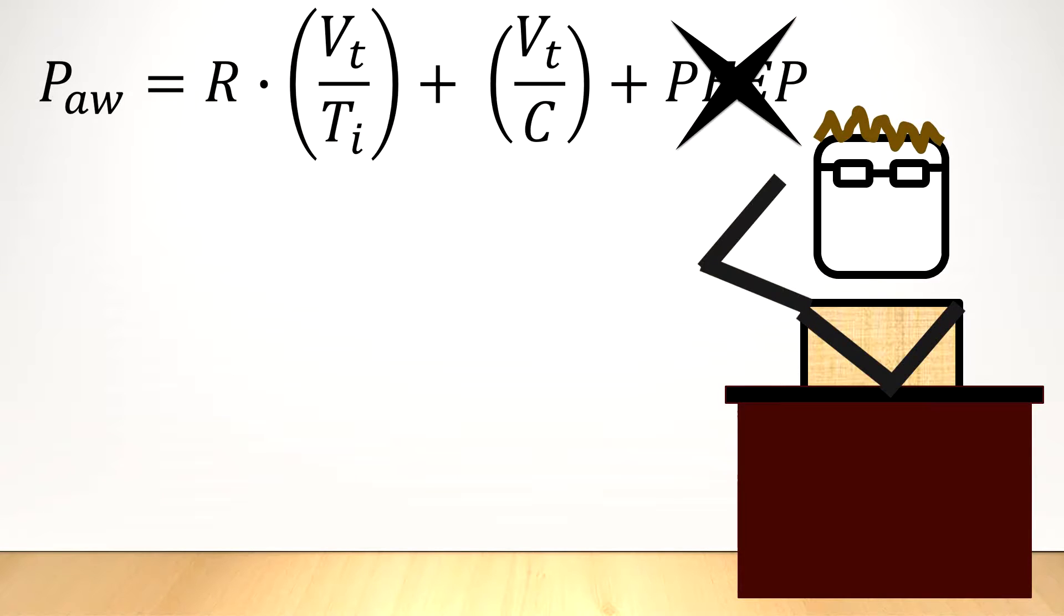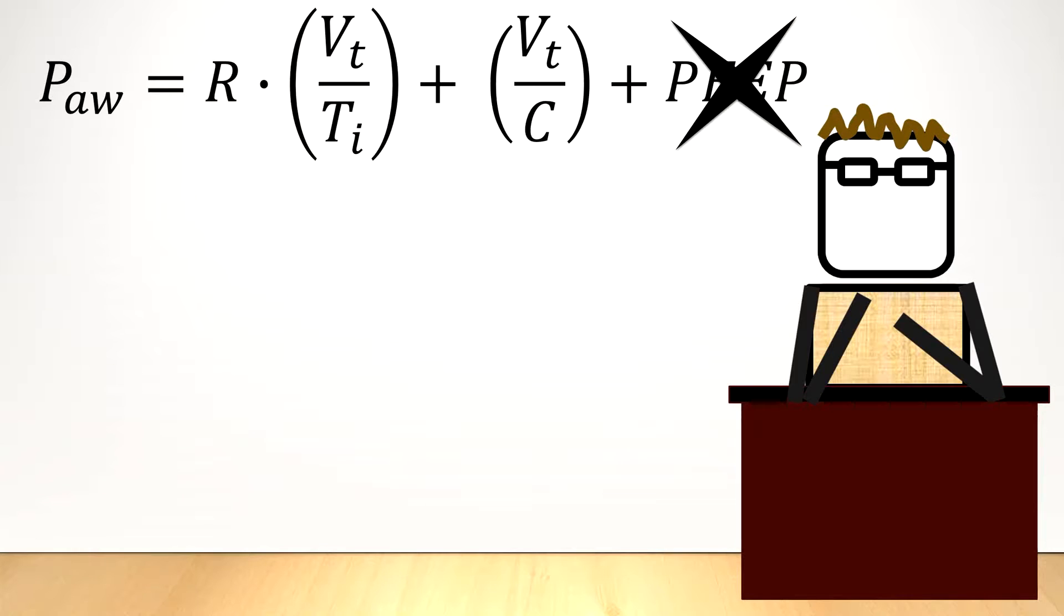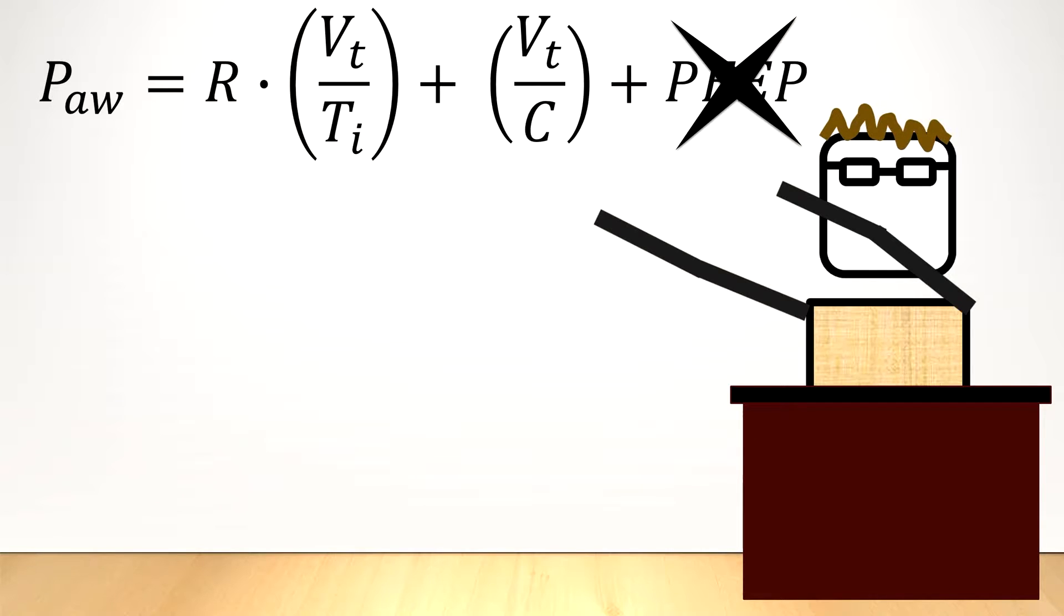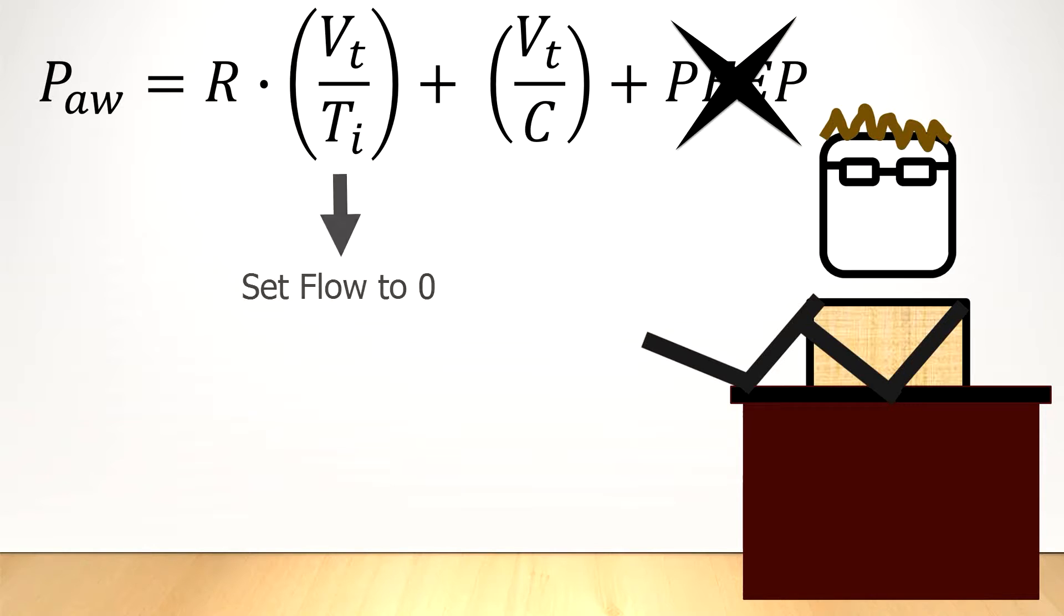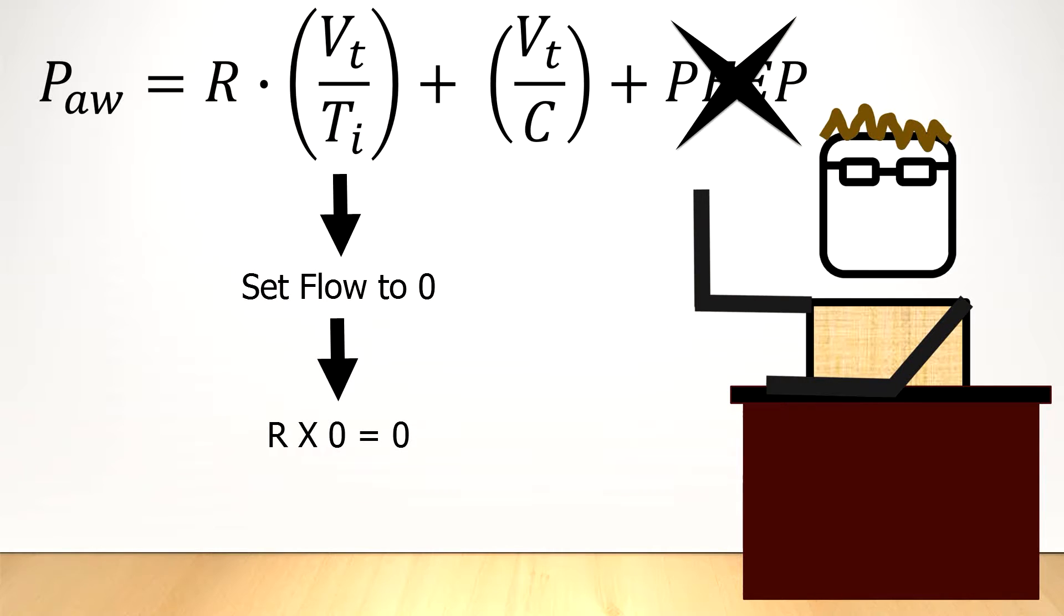So how do we get rid of the airway part so we can just measure the pressure in the lungs? Well, we could do the same thing as we did with the peep component, if we could just measure the airflow and the airway resistance, but we can't. But if there was no airflow, then multiplying the zero airflow with the airway resistance would still give us a zero and effectively remove that component.